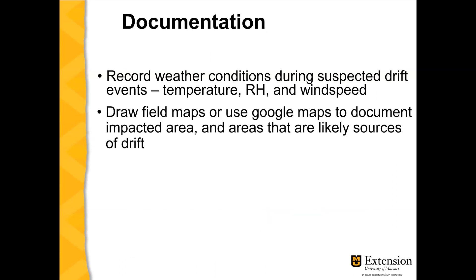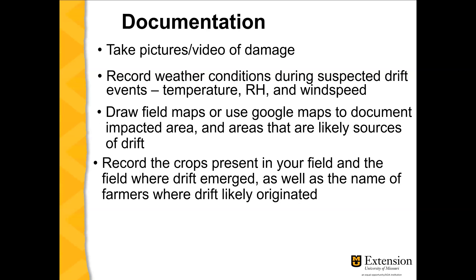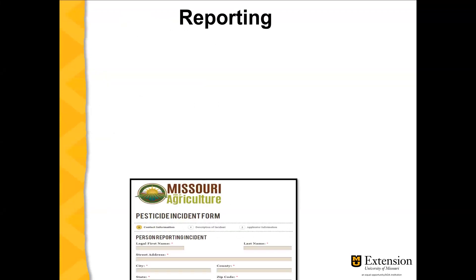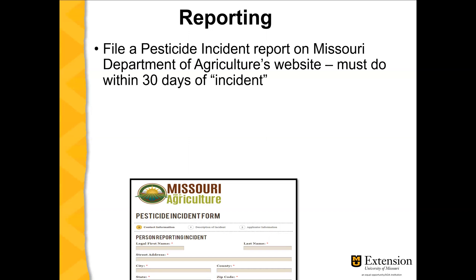Some documentation that can be helpful: record the weather conditions when you think the drift is happening, draw field maps, take pictures of the damage, and record what plants are present and what plants were impacted. It's also helpful to keep purchase and sales invoices to show how much money was spent on that crop. If you need to file an incident report with the Missouri Department of Agriculture, the form can be found on their website — it's called a pesticide incident report. You must do this within 30 days of the incident.